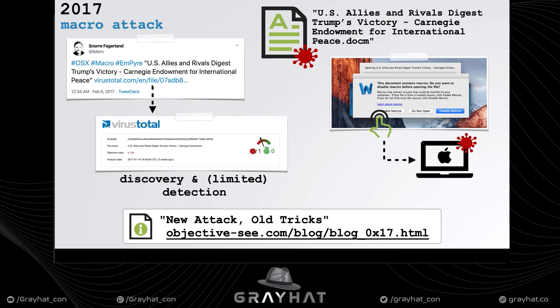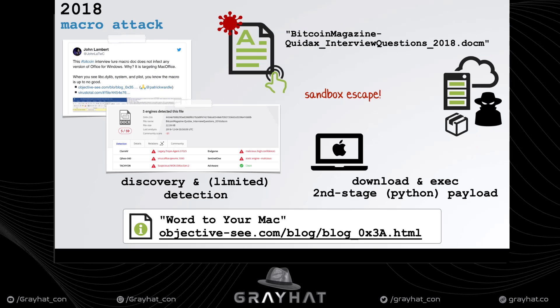Starting in 2017, we have a document that appears to be about Trump's election. If opened and the user clicks through the enabled macro prompts, the system would be infected. Moving to 2018, a document about Bitcoin — if the user was tricked into allowing macros to execute, the system would be owned. The most interesting aspect of this 2018 attack was that it contained embedded exploit code — specifically an embedded sandbox escape designed to break out of Microsoft Office's sandbox.